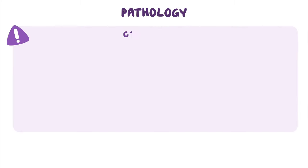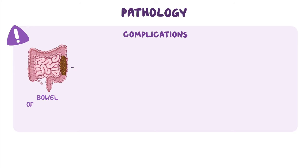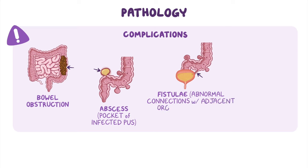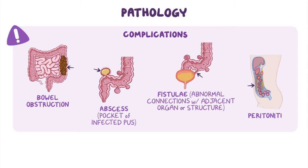Diverticulitis can in turn lead to serious complications, including bowel obstruction as well as the formation of an abscess, which is a pocket of infected pus. Some clients may develop fistulae, which are abnormal connections with an adjacent organ or structure. In other cases, if the diverticula becomes distended enough, it may rupture and cause peritonitis.